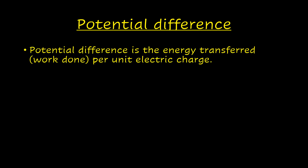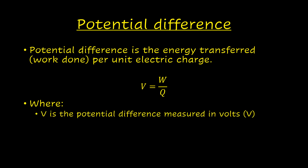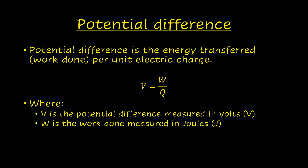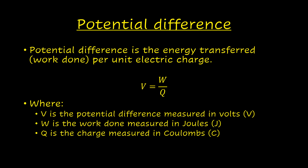We can define a quantity called potential difference. Potential difference across the ends of a conductor is the energy transferred, or the work done, per unit electric charge flowing through it. In symbols: V = W ÷ Q, where V is the potential difference measured in volts, W is the work done measured in joules, and Q is the amount of charge measured in coulombs. Potential difference can also sometimes be referred to as voltage.